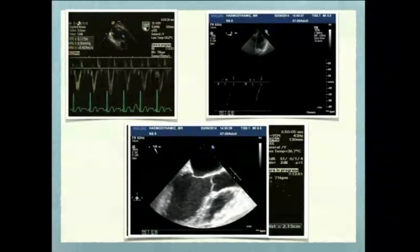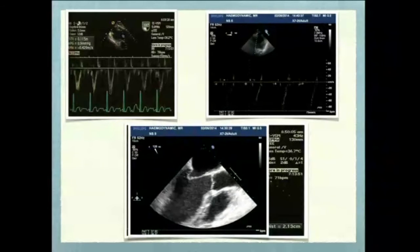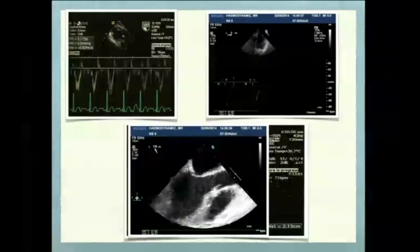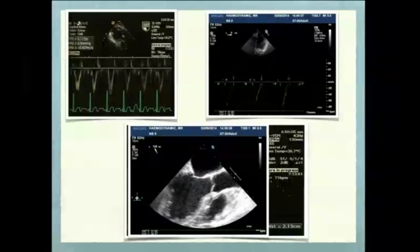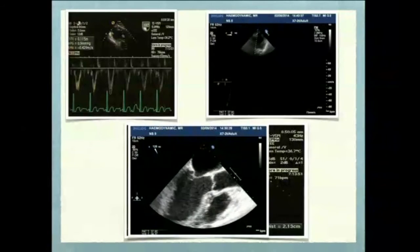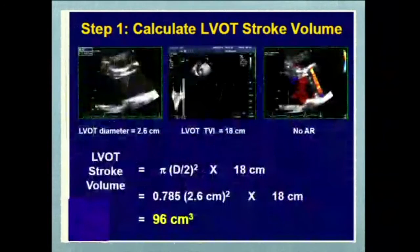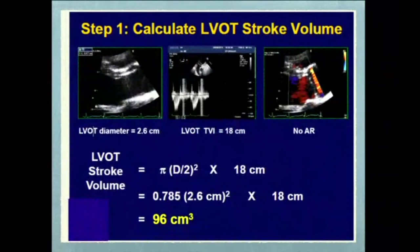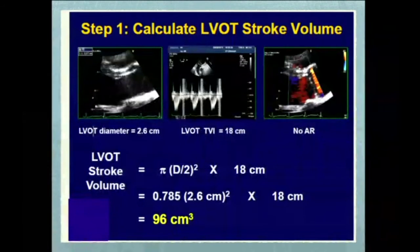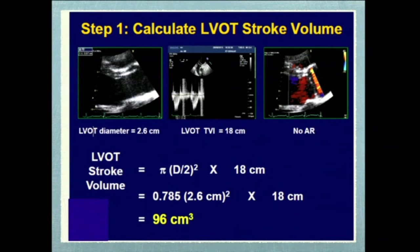Once we have the diameter of the opening — either aortic valve or LVOT — that gives us the cross-sectional area, and the complete tracing of the VTI signal gives us the VTI. The formula is: cross-sectional area multiplied by VTI equals stroke volume, and stroke volume multiplied by heart rate gives cardiac output.